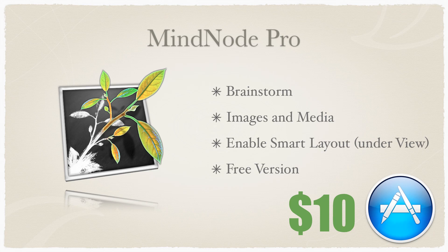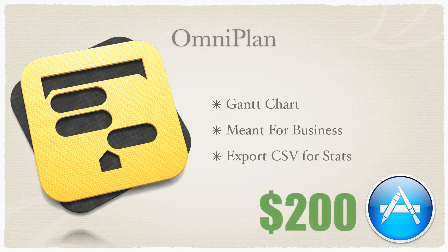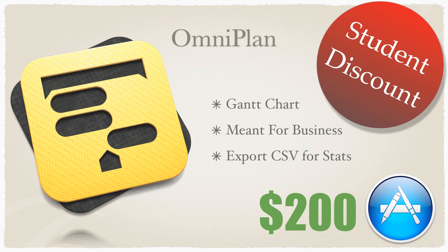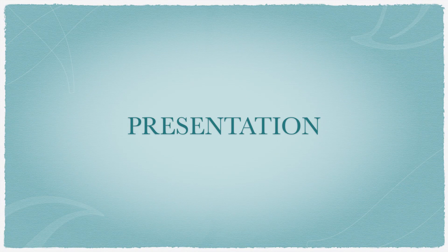Next up is OmniPlan — the most expensive application here. It creates Gantt charts; if you're not familiar with Gantt charts, this one might be a bit advanced since it's aimed at businesses. But I like using it because you can export data as CSV, view statistics, and it actually schedules your day for you. You put in everything you need to get done this semester and it tells you what needs to get done today. You can get a student discount from the Omni Group website, though a discount on a $200 app is still pretty steep.